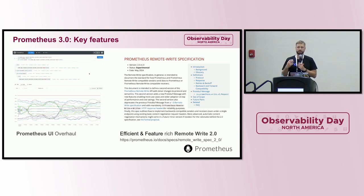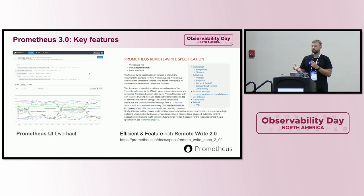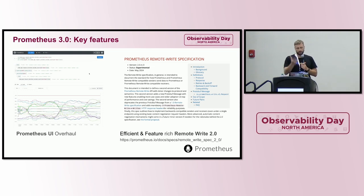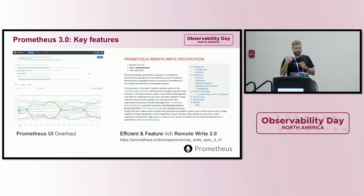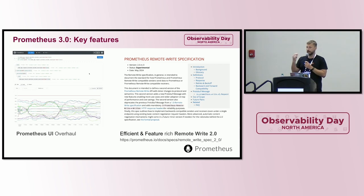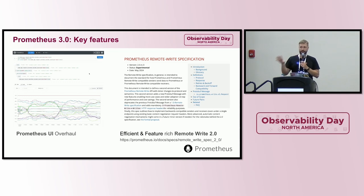To power this UI, we also improved the specification for our protocol for metric streaming in Prometheus — it's called RemoteWrite. RemoteWrite 2.0 comes with essentially more capabilities around sending richer data, so you can send along your samples, metadata, exemplars, and histograms, while also being more reliable — especially around partial errors — and more efficient because of our novel string interning mechanism. So you can enable more but cost less.